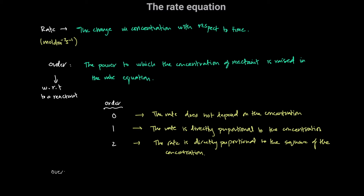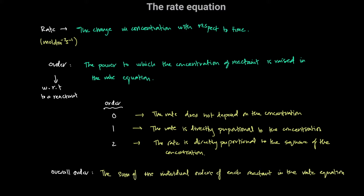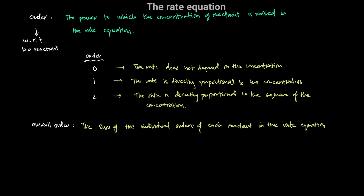The overall order of a reaction is the sum of the individual orders — the sum of the individual orders of each reactant in the rate equation.